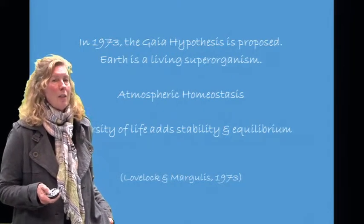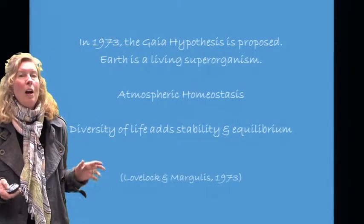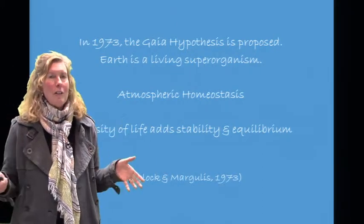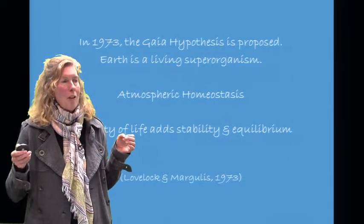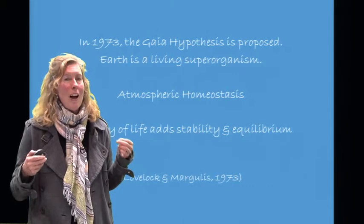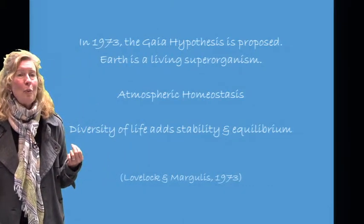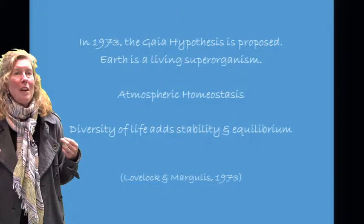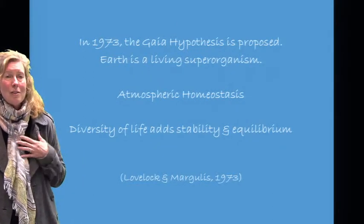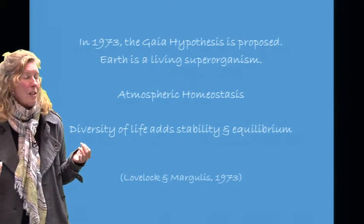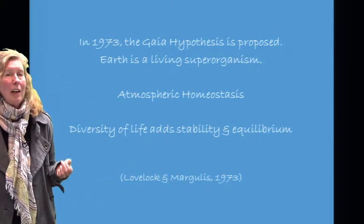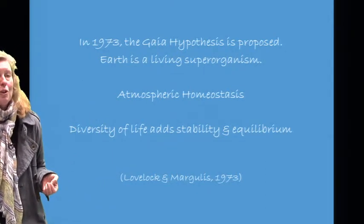In 1973, the Gaia Hypothesis was proposed. What the Gaia Hypothesis says is that the Earth is a living superorganism. The Earth has a circulatory system — it has lakes, rivers, and oceans — and it also breathes. It maintains an atmospheric homeostasis, just as we maintain homeostasis. Further, it's stated that the diversity of life — biodiversity — adds stability and equilibrium to the biosphere.